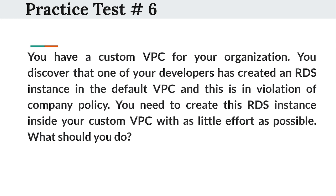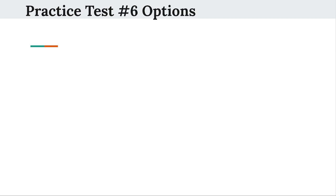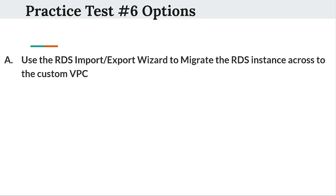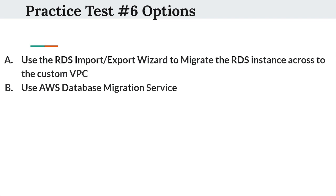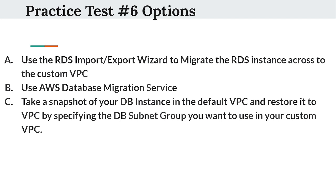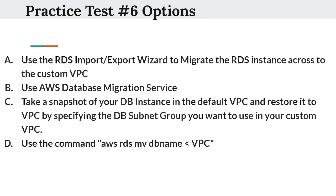So the next question is: You have a custom VPC for your organization. You discover that one of your developers has created an RDS instance in the default VPC, which is in violation of company policy. You need to create this RDS instance inside your custom VPC with as little effort as possible. What should you do? Option A: Use the RDS import/export wizard to migrate the RDS instance across to the custom VPC. Option B: Use AWS Database Migration Service. Option C: Take a snapshot of your DB instance in the default VPC and restore it to VPC by specifying the DB subnet group you want to use in your custom VPC. Option D: Use the command AWS RDS mvdb name.